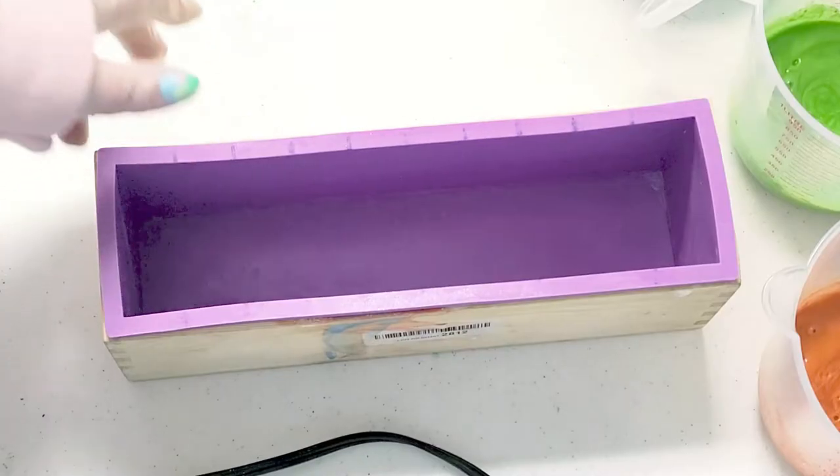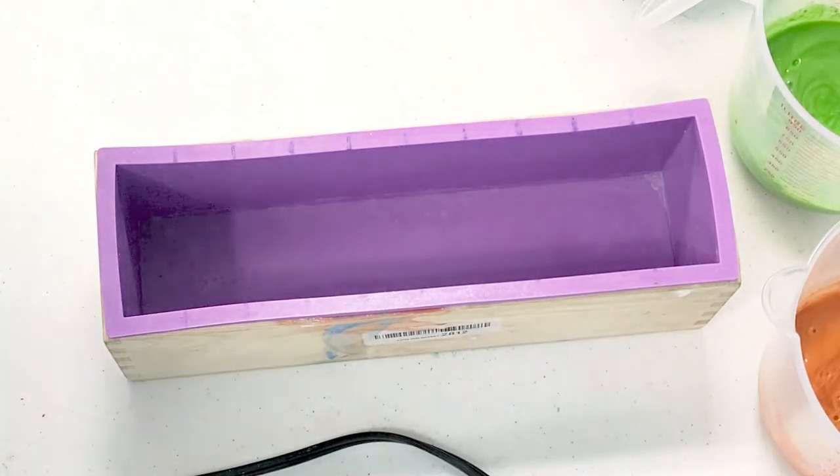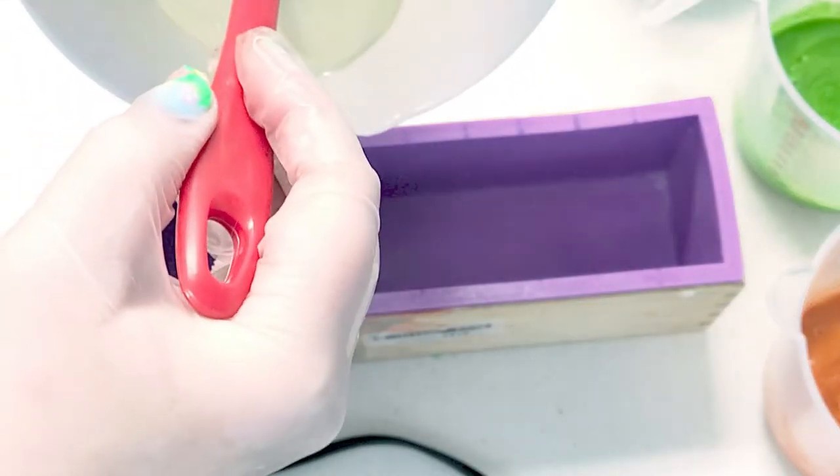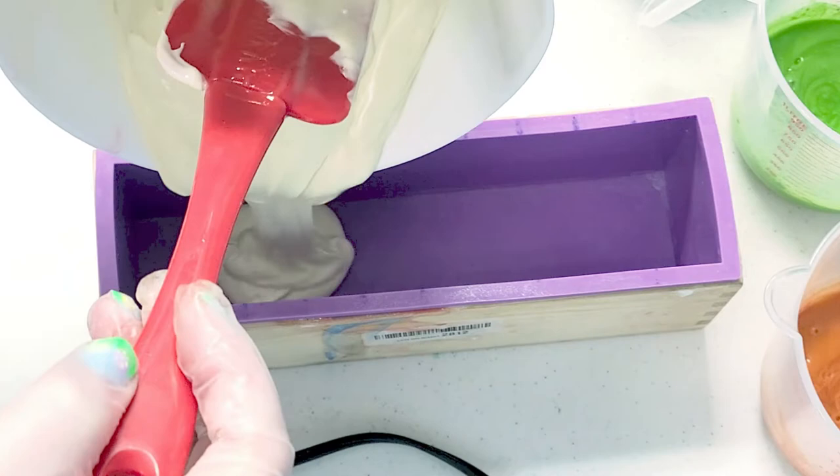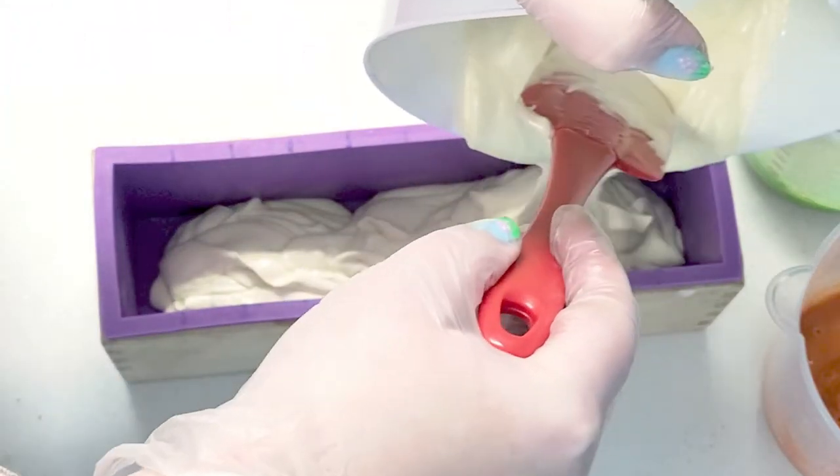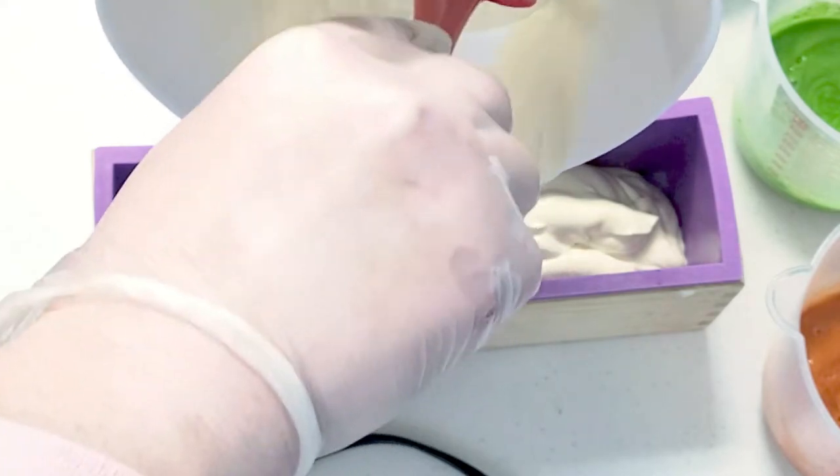The white, I'm sure, is probably pretty set up right now because white tends to set up... Just the titanium dioxide tends to set your soap up. So it's going to be very gloopy, which is fine.